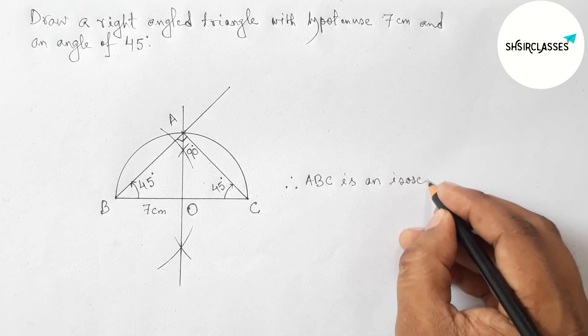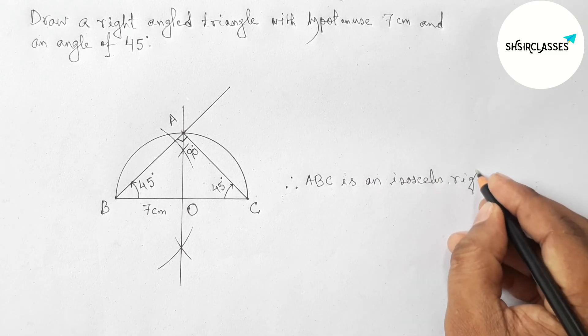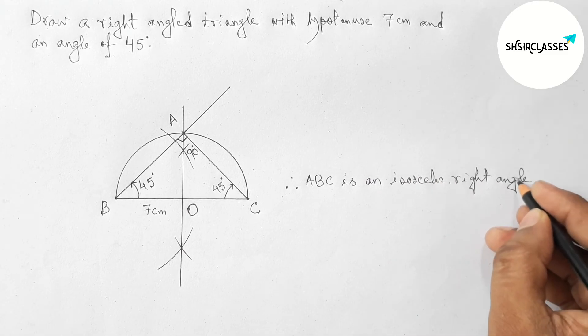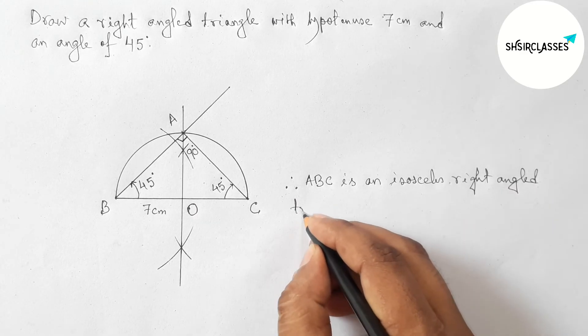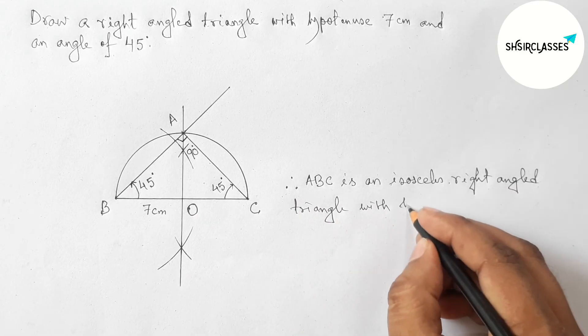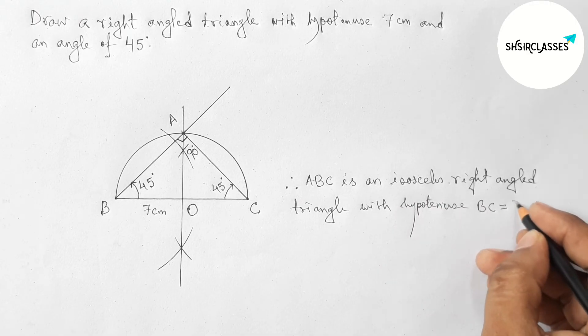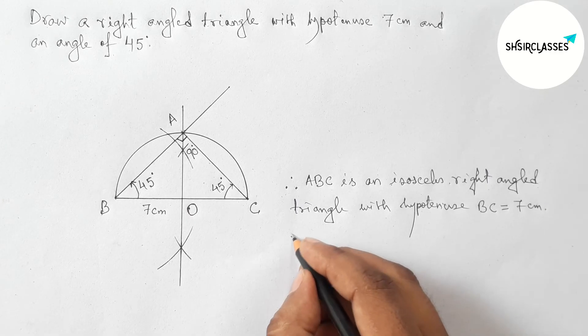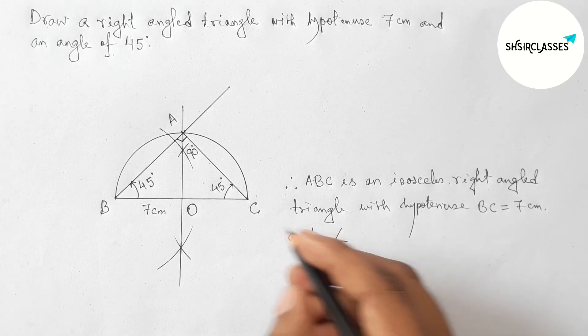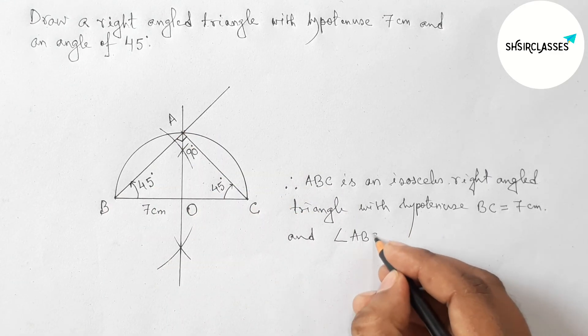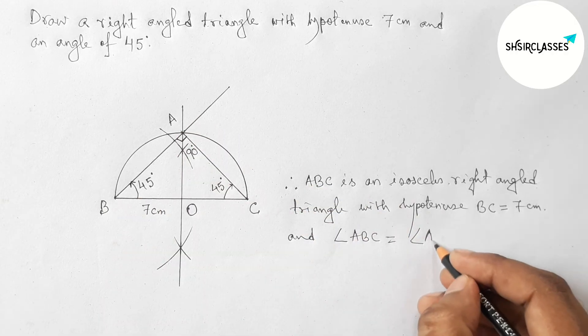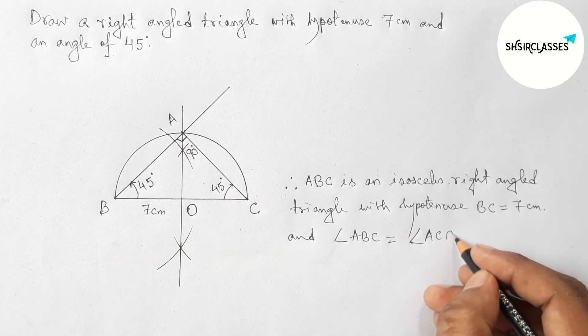With hypotenuse BC equal to 7 centimeters, and angle B and angle C both are equal and 45. So angle ABC equals 45 and angle ACB equals 45.